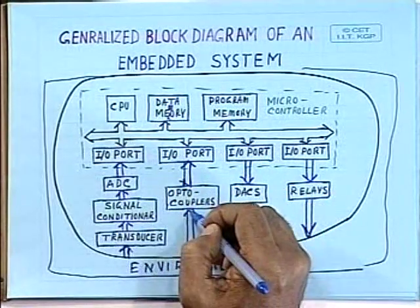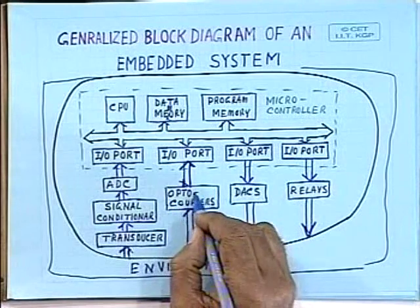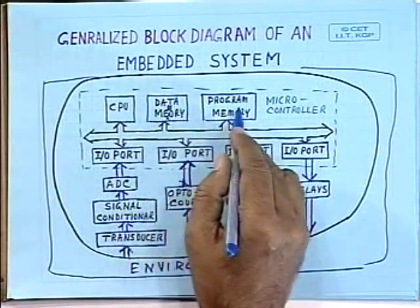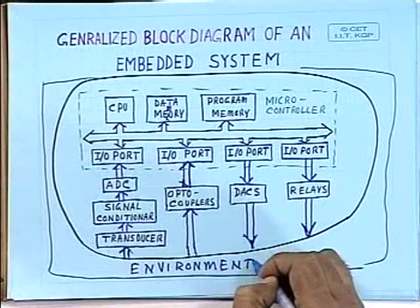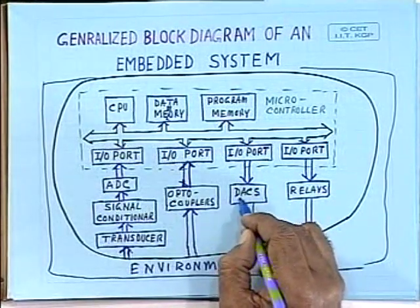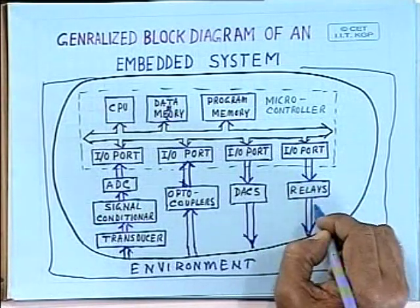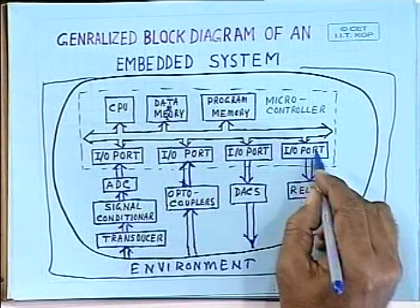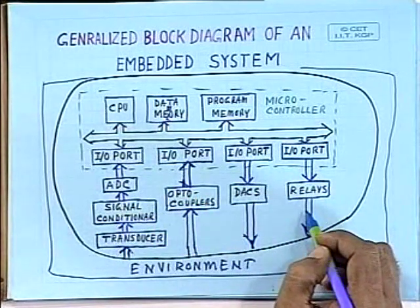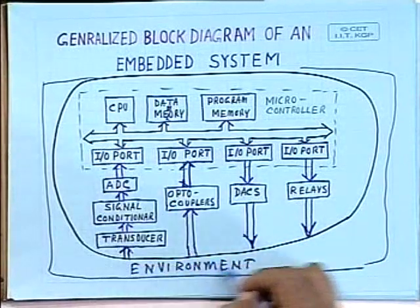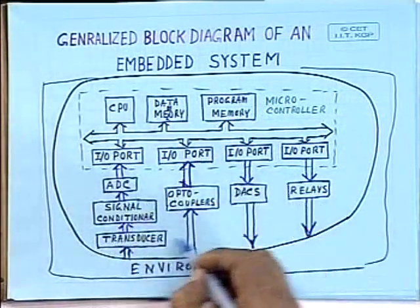You will also input some on/off type of signals with the help of optocouplers through IO ports. To generate analog signals for controlling some parameter, digital-to-analog converters are interfaced through IO ports. For high voltage and high current control, relays are interfaced through IO ports to the microcontroller. So, these are the different types of input-output devices required for interfacing with the environment in embedded systems.